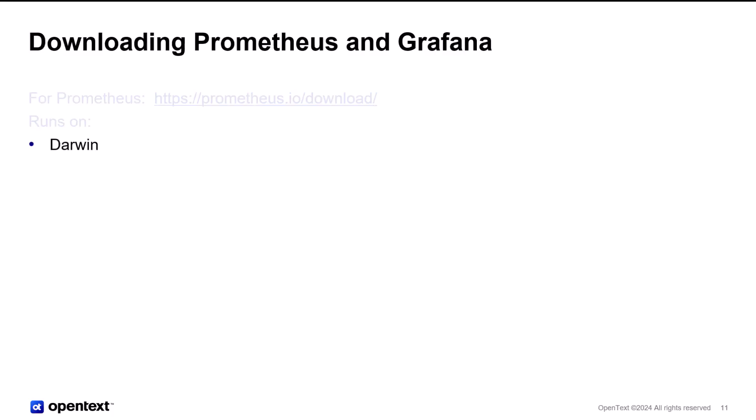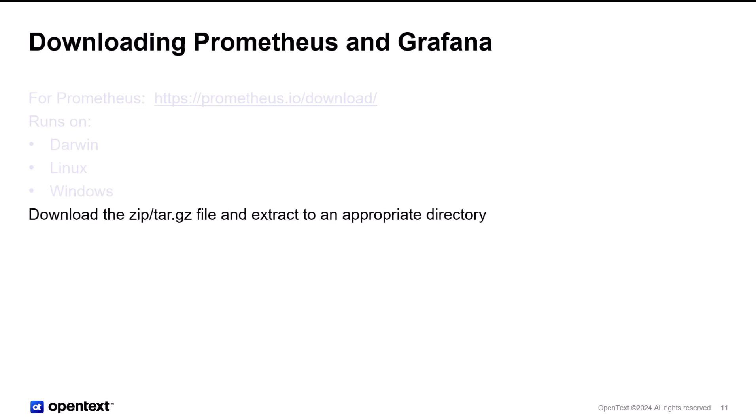For Prometheus, you can do a Google search on Prometheus downloads, but it should direct you to prometheus.io/downloads, which runs on Darwin, Linux, and Windows. It is a zip or a tar.gz file, and you extract it to the appropriate directory and then start running it. There is no installer for Prometheus.